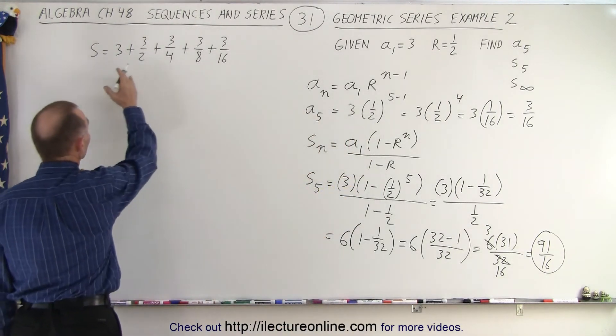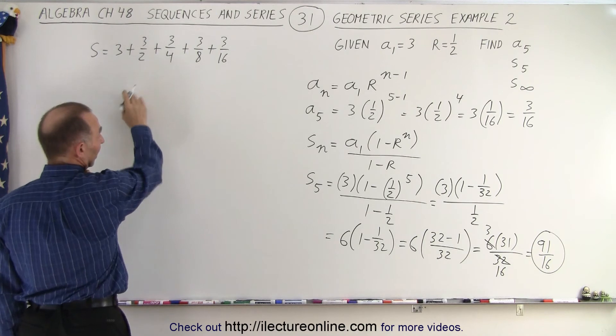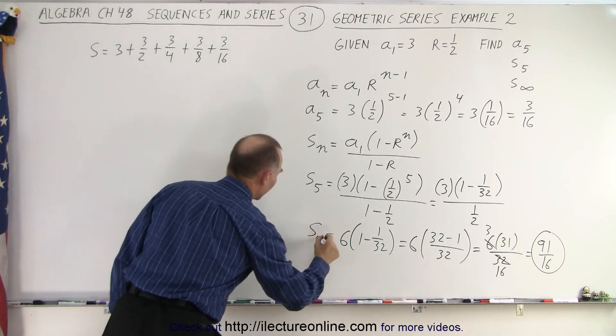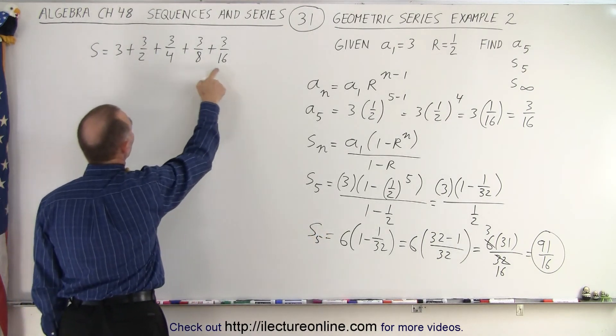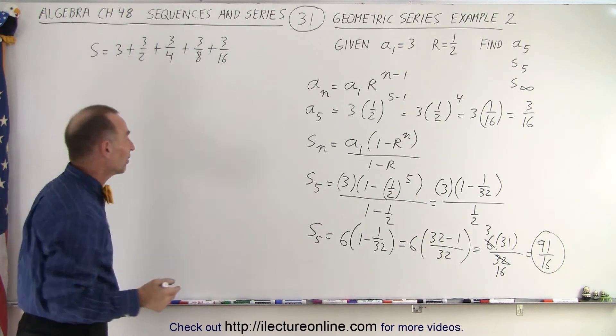You can check that by simply adding the first five terms together. This is s of 5. So we have 1, 2, 3, 4, 5. Let's check it to see if this is correct.